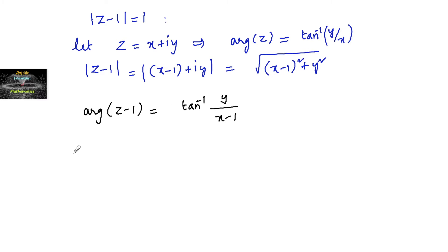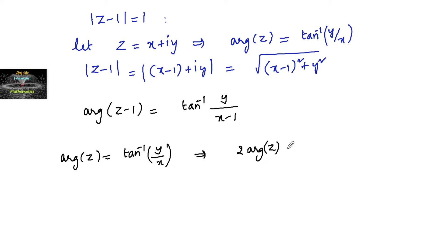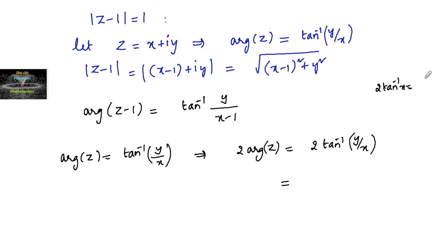Since argument of z is equal to tan inverse of y upon x, multiplying 2 on both sides gives 2 times argument of z is equal to 2 tan inverse of y by x. And since we know the formula 2 tan inverse x is equal to tan inverse of 2x divided by 1 minus x squared.